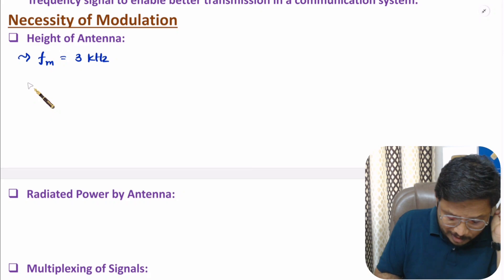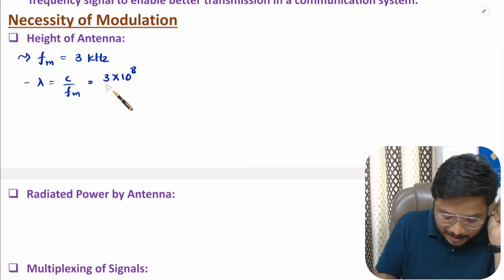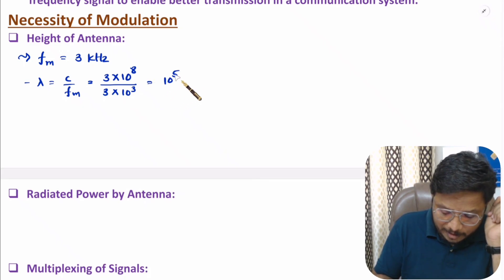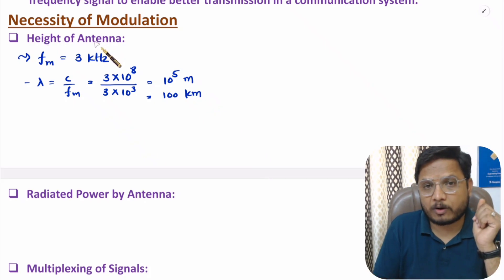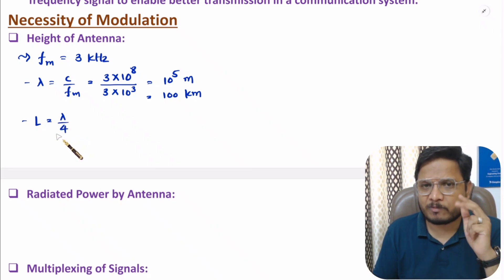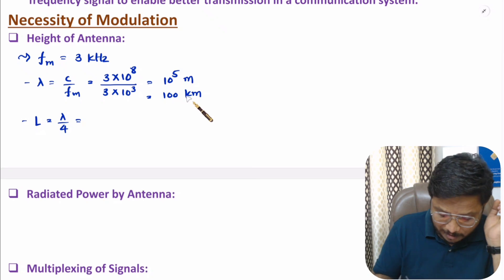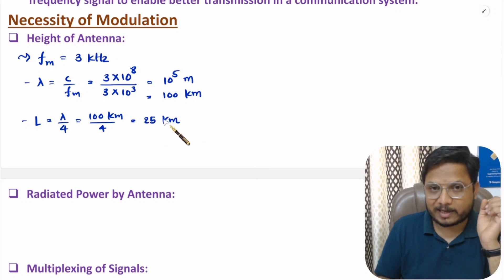With this frequency, the wavelength is λ = c/f, where c is the velocity of light in free space, 3×10⁸ m/s, and frequency is 3 kHz = 3×10³ Hz. So wavelength = 10⁵ meters, or 100 kilometers. The size or height of an antenna is approximately λ/4, so that would be 100 km divided by 4, which equals 25 kilometers.